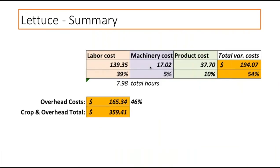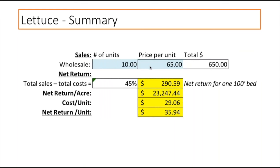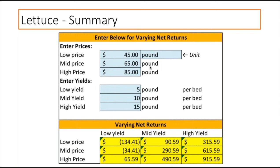When I add up my overhead costs, I get pretty substantial numbers — and I still think they're too small. For one bed I've got $165. If I add that to the $94 variable cost I came up with, I've got a total cost of $360 to produce that one bed of lettuce seed. If I got 10 pounds and sold it at $65 a pound, that's $650 in total sales. Subtract the $360 of expenses, that means I made $290. Extrapolating that out per acre, that's $23,000, or about $36 a pound is profit and $30 a pound is cost.